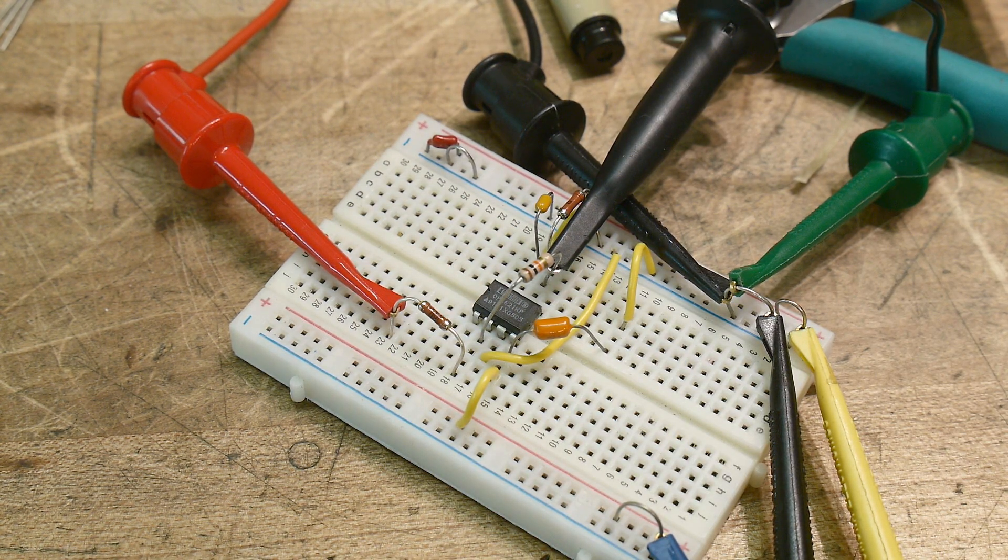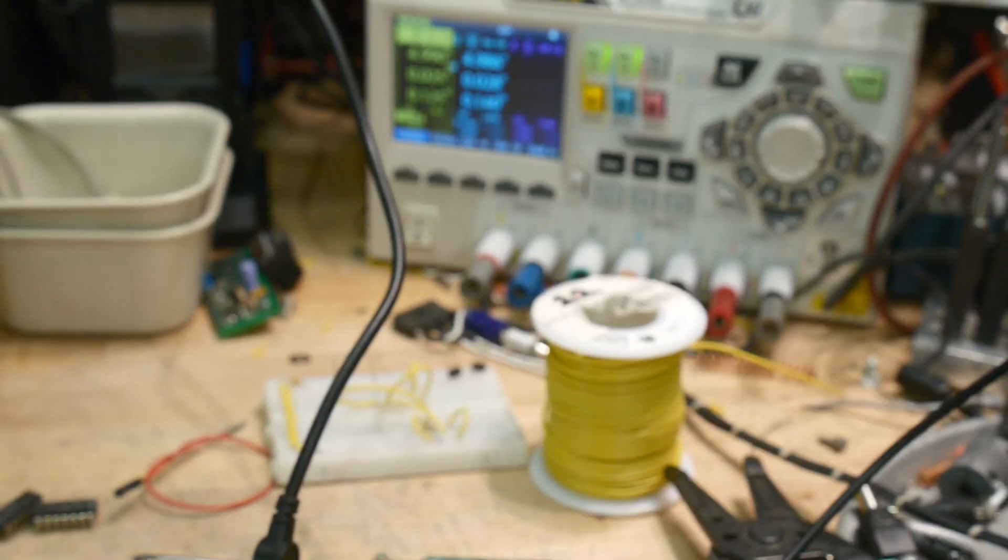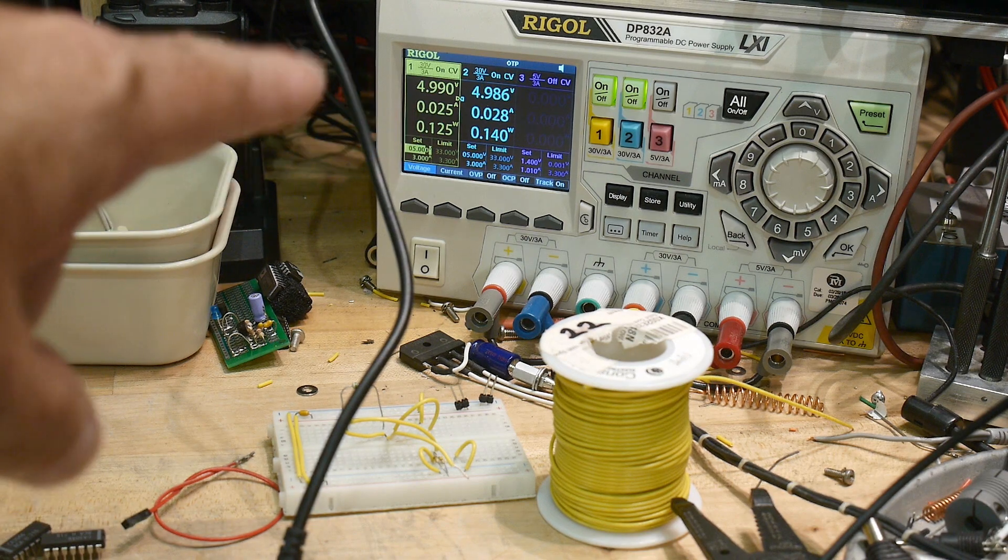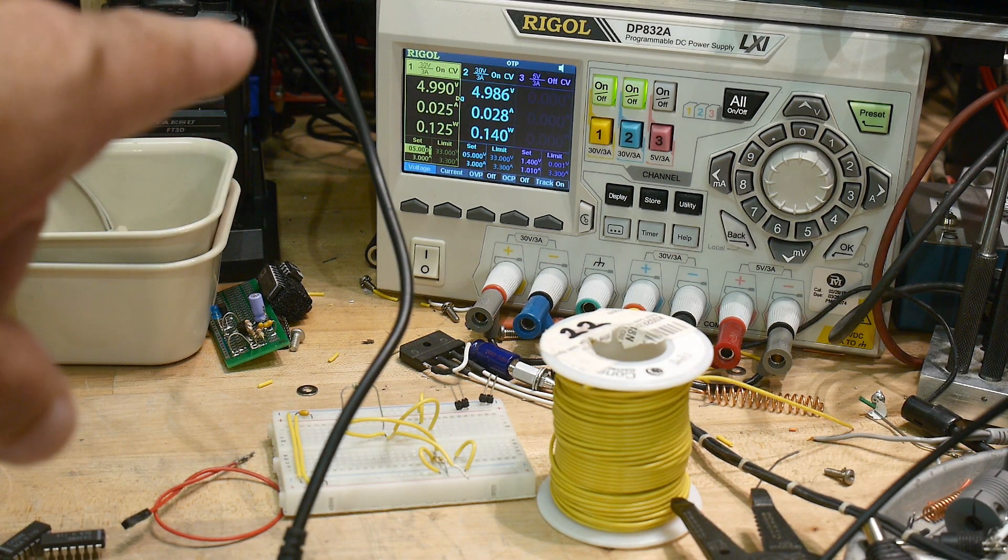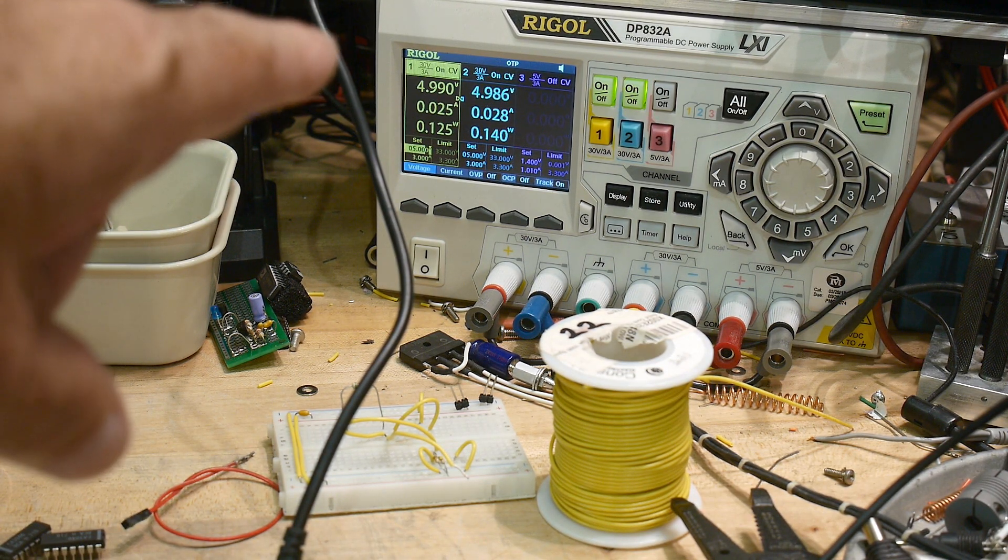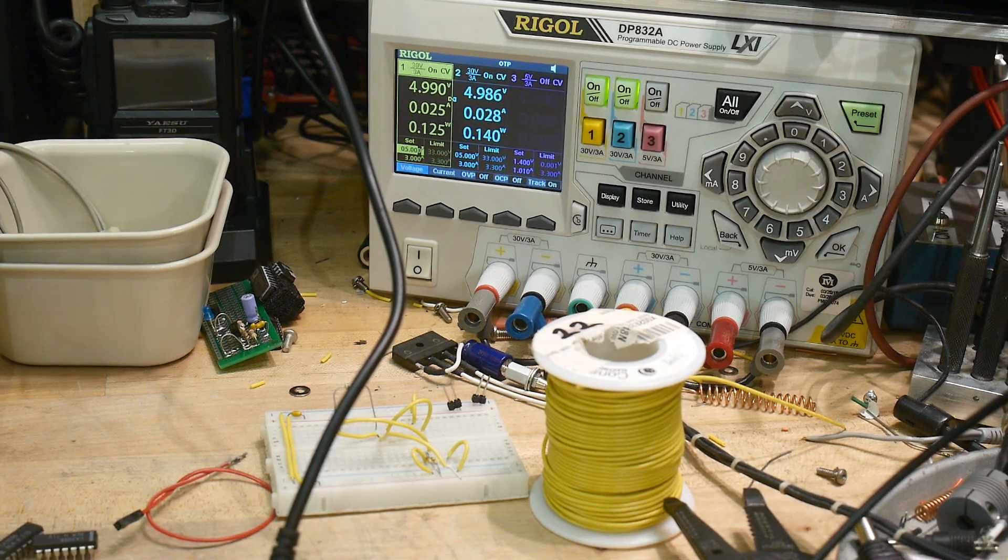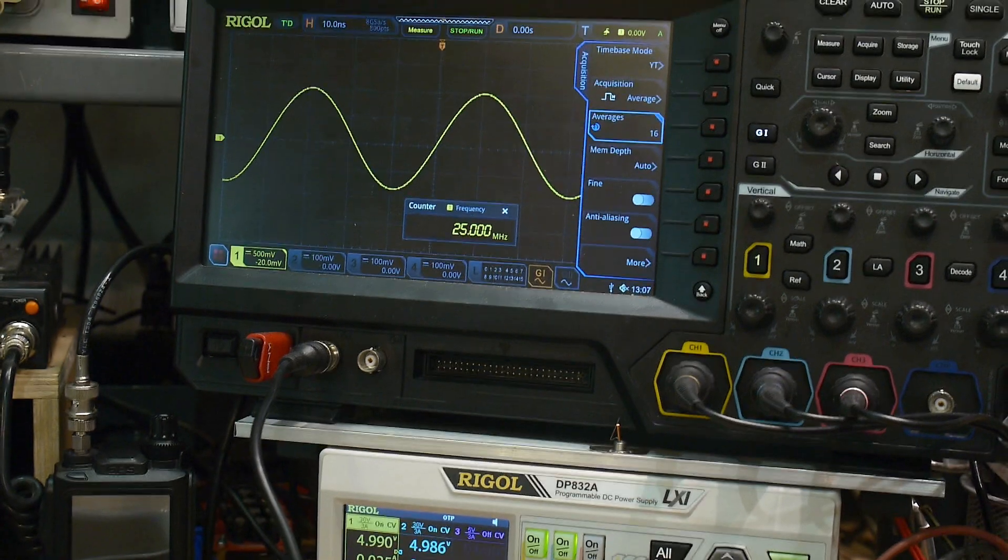I'm running it off plus and minus five volts. You can see we're at 25 milliamps on the minus rail and 28 milliamps on the plus rail. Here's our output.